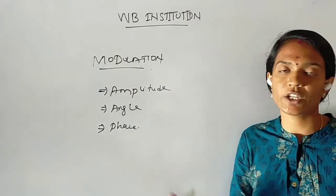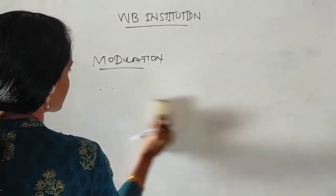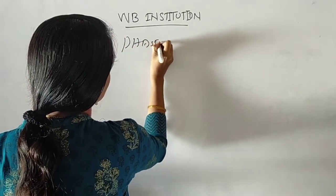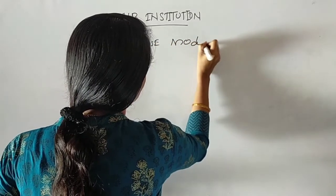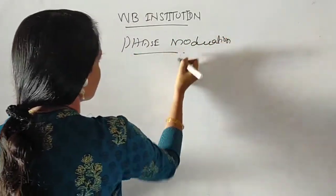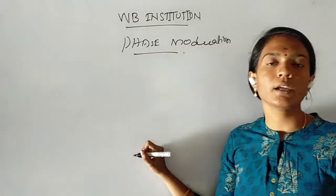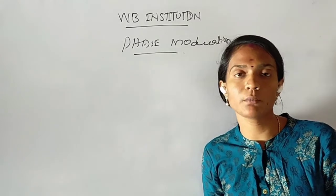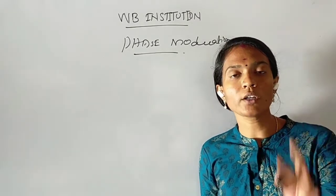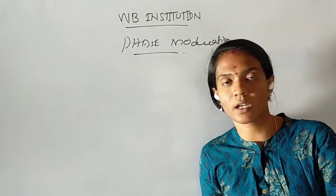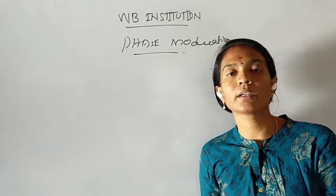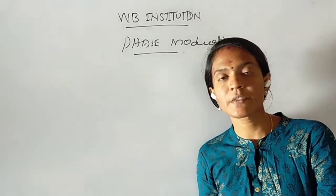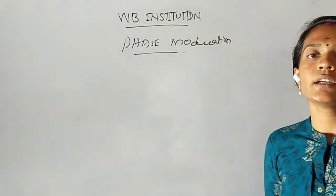So the first one is phase modulation. In phase modulation, the phase of the carrier signal changes with respect to the modulating signal — that means the message signal. So the message signal is the modulating signal in phase modulation.